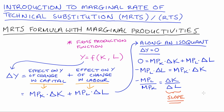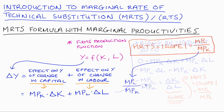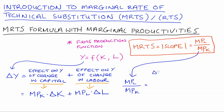Taking the absolute value of that slope removes the negative, and we find that MRTS = MPL / MPK — the ratio of marginal products. The marginal product of labour is equal to Δy/ΔL, and the marginal product of capital is equal to Δy/ΔK.